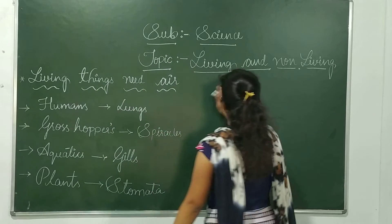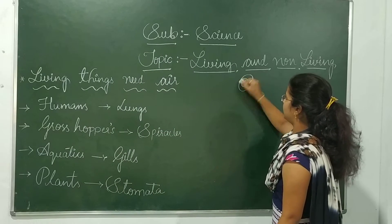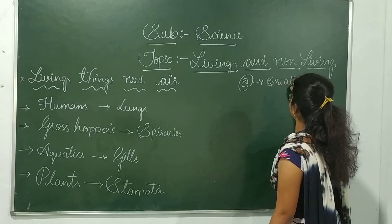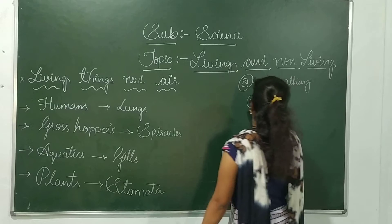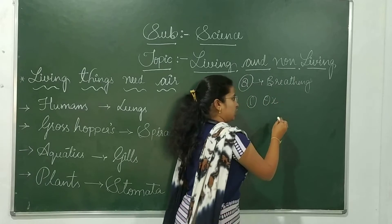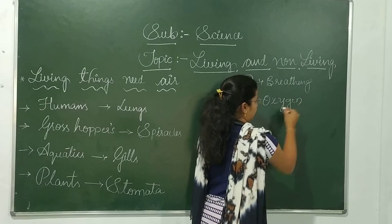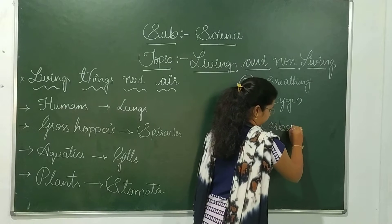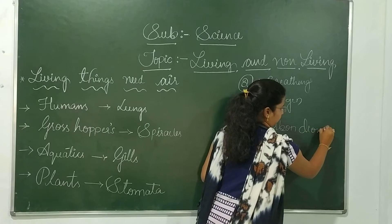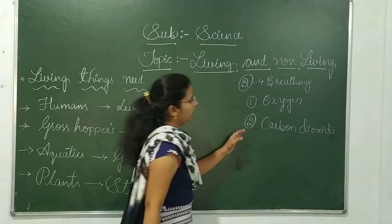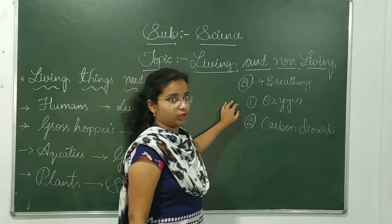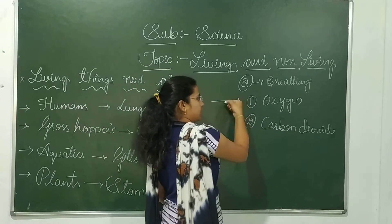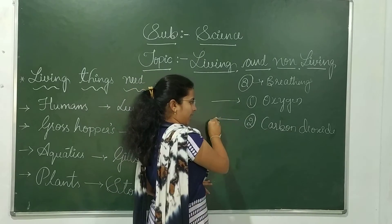Especially in human beings, two types of air are used in breathing. The first one is oxygen, which is very essential. The second one is carbon dioxide. We should all know that human beings take in oxygen and give out carbon dioxide.